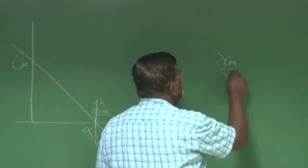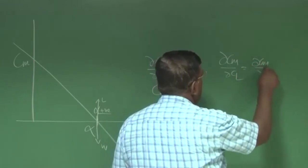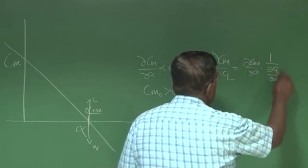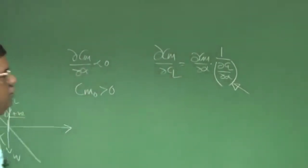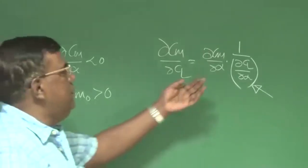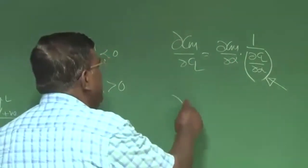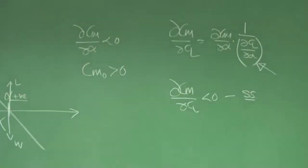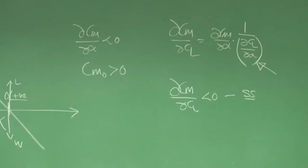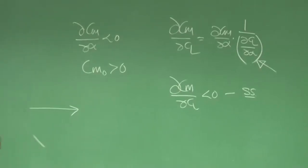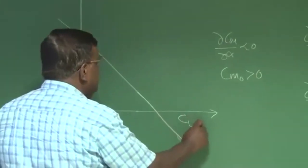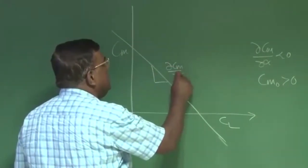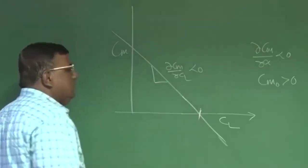And we have also seen that dCm/dCL is nothing but dCm/dα assuming everything to be linear divided by 1 by dCL/dα. Since this gentleman is always positive, which is lift slope, so when I say dCm/dα less than 0 is a condition for static stability, I also equivalently say dCm/dCL less than 0 is the condition for static stability.